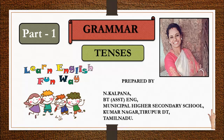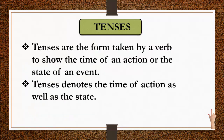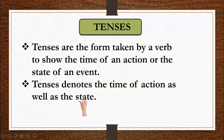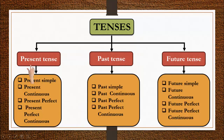Let us see what tenses are. Tenses are the form taken by a verb to show the time of an action or the state of an event. Tenses denote the time of action as well as the state. In Tamil, tenses are called 'kaalam' or 'kaalangal' — meaning the time at which something happens.